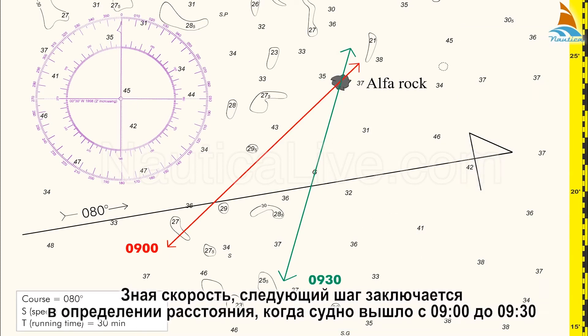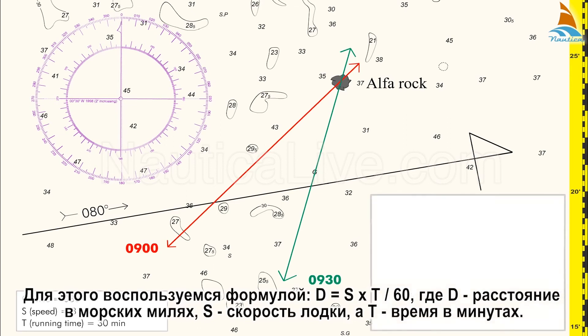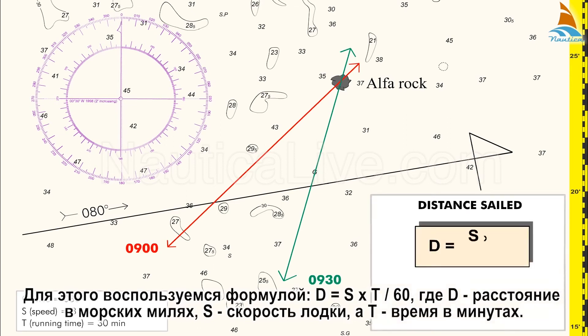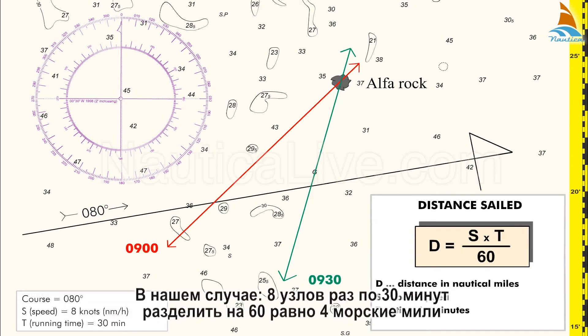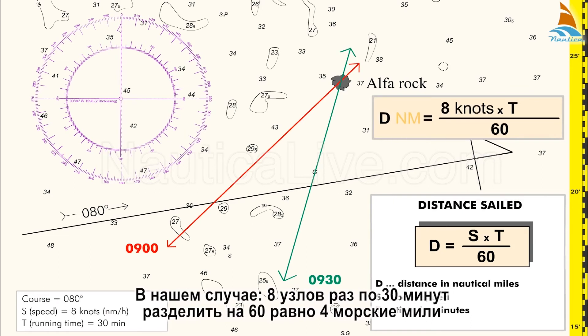Knowing the speed, the next step is to determine the distance that the vessel sailed from 0900 to 0930. For that we use the formula D = S × T ÷ 60, where D is the distance in nautical miles, S is the boat speed, and T is the time in minutes. In our case, 8 knots times 30 minutes divided by 60 equals 4 nautical miles.